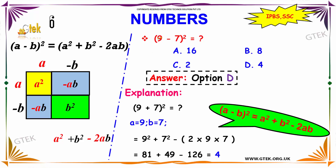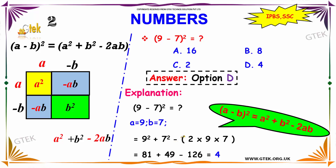If we apply this to the problem: 9 minus 7 whole square is equal to what? a is equal to 9, b is equal to 7. So 9 square plus 7 square minus 2 into 9 into 7. We get: 81 plus 49 minus 126. The answer is 4.